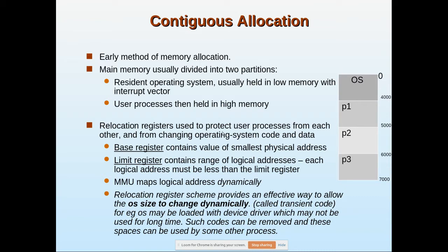Relocation registers are used to protect user processes from each other and from changing operating system code. One user process should not go and change the code or data of the operating system — that would cause everything to crash. For that purpose we have two registers: the base register and the limit register.